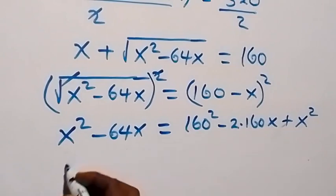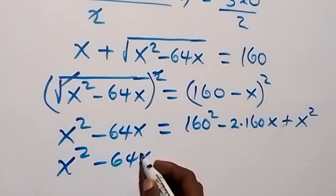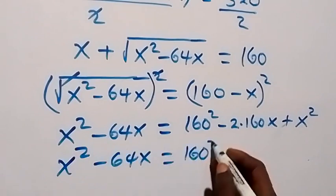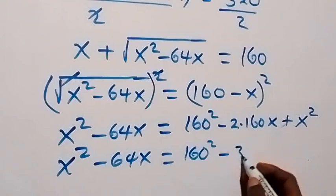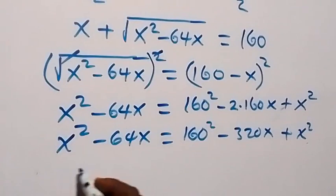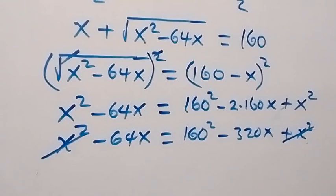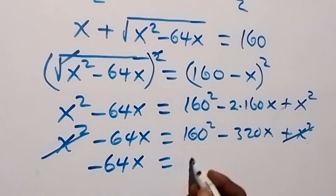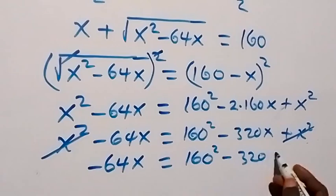We write it as x² − 64x equals 160² − 320x + x². When we subtract x² from both sides, x² cancels on each side. We are left with −64x equals 160² − 320x.